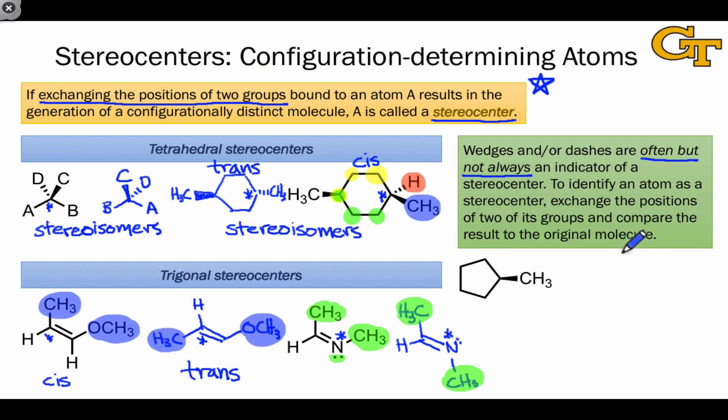To determine whether an atom is a stereocenter or is not, I strongly advise that you apply this fail-safe process of exchanging two groups and determining whether the generated molecule is the same or not the same as the original.